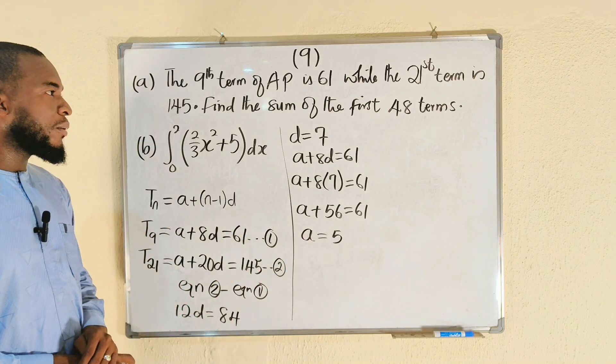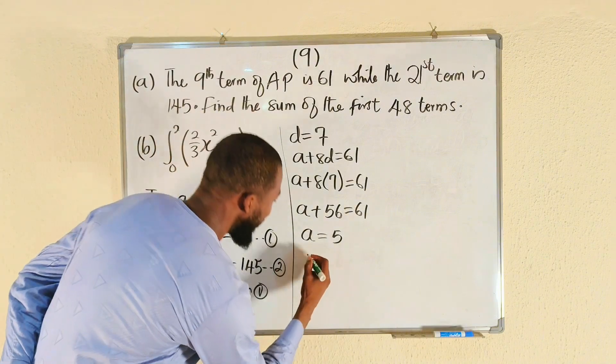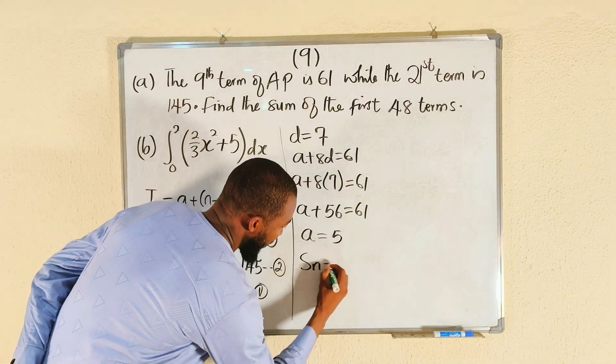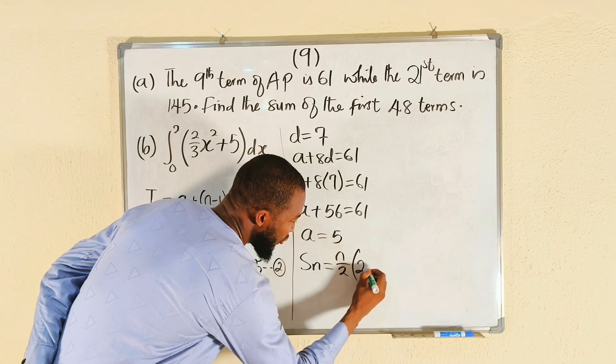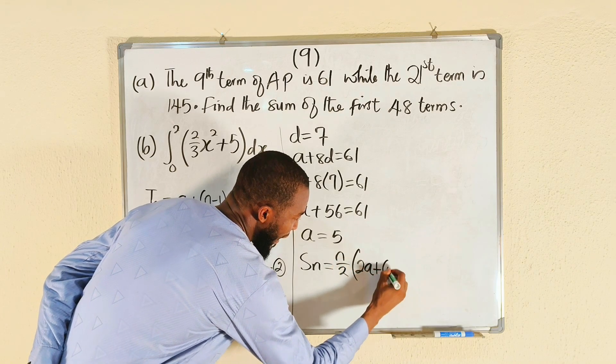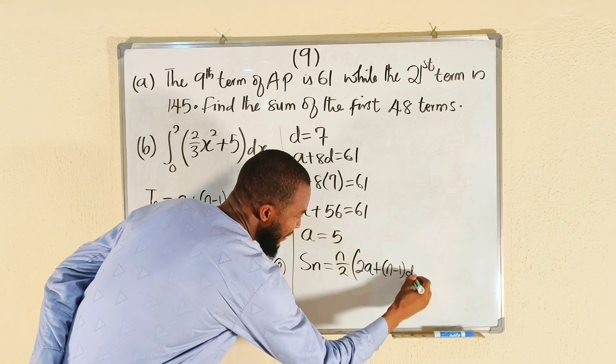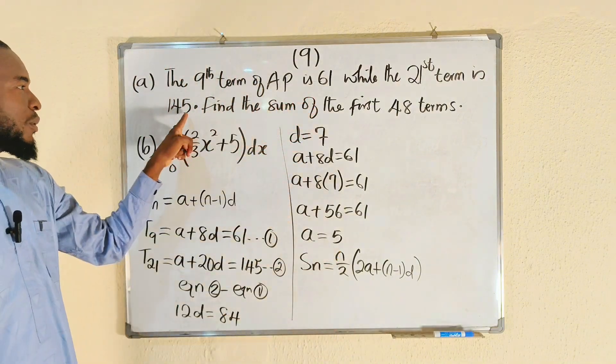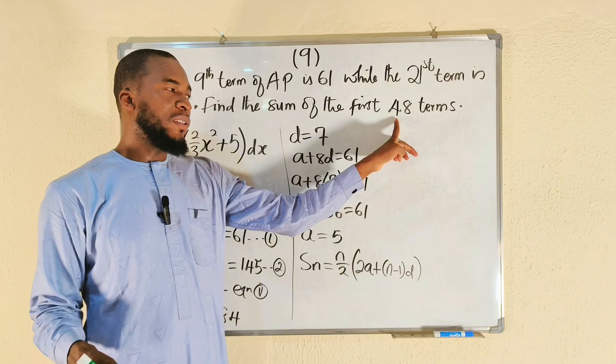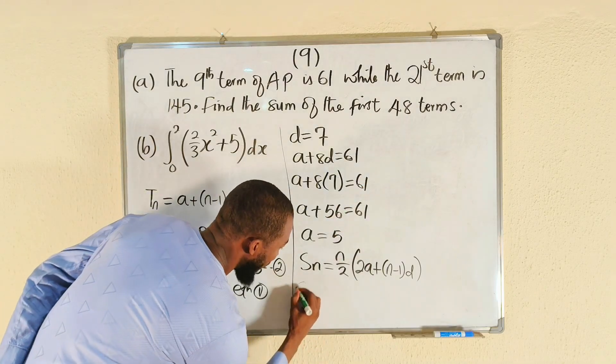So we have d and we have a. Let us apply our formula for finding the sum of terms of arithmetic progression: Sn equals n divided by 2 multiplied by (2a plus (n minus 1) multiplied by d). This is the formula. n is 48 according to the question because we are looking for the first 48 terms.